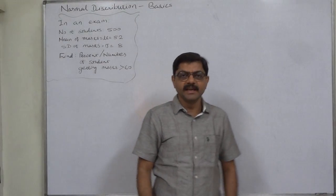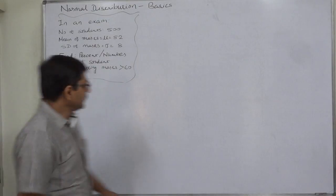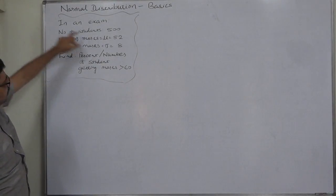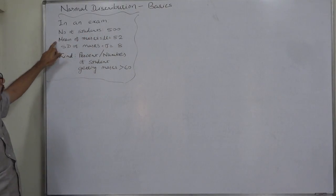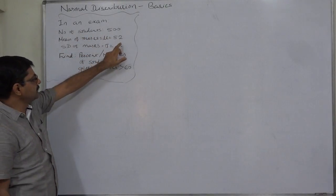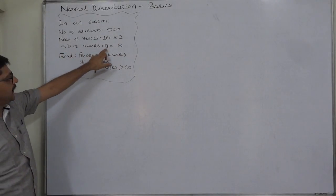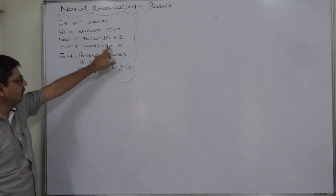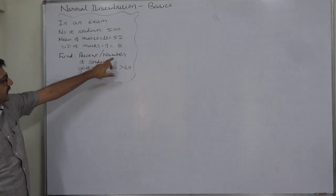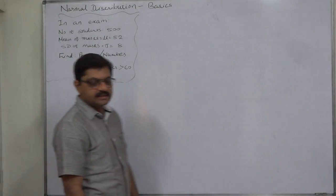Welcome to a new case in basics of normal distribution. In an examination, the number of students is 500, the mean of the marks (mu) is 52, and the standard deviation (sigma) is 8. We need to find the percent and number of students getting marks greater than 60.